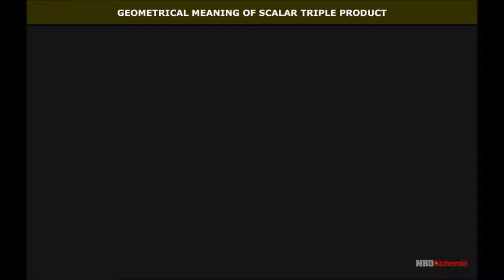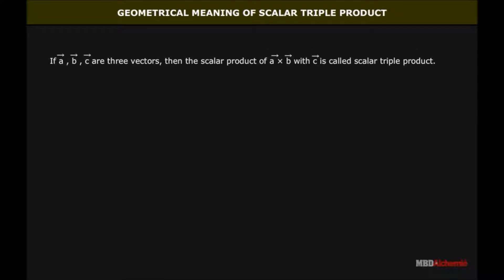Scalar Triple Product — Definition: If vector A, vector B, vector C are three vectors, then the scalar product of vector A cross B with vector C is called the scalar triple product.